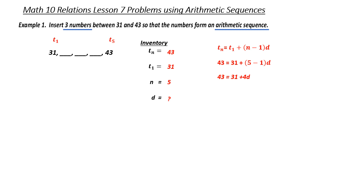To isolate for d, I need to get rid of 31 and 4. I'll get rid of 31 first — it is adding, so I subtract 31 from both sides. 43 minus 31 is 12, giving me 12 equals 4d. d is being multiplied by 4, so I divide both sides by 4. 12 divided by 4 is 3. Therefore, my common difference is 3.